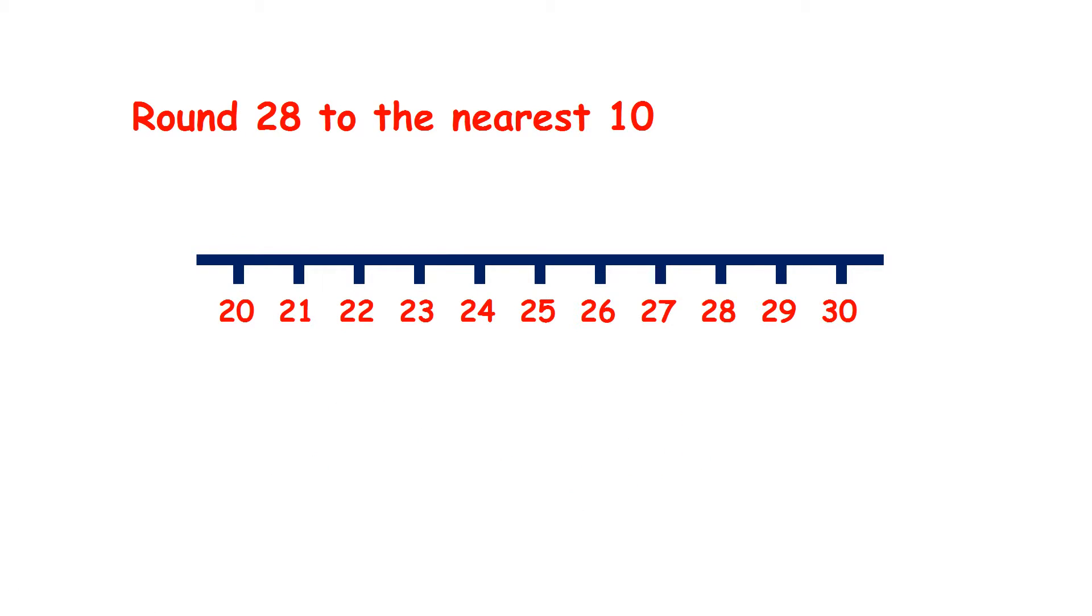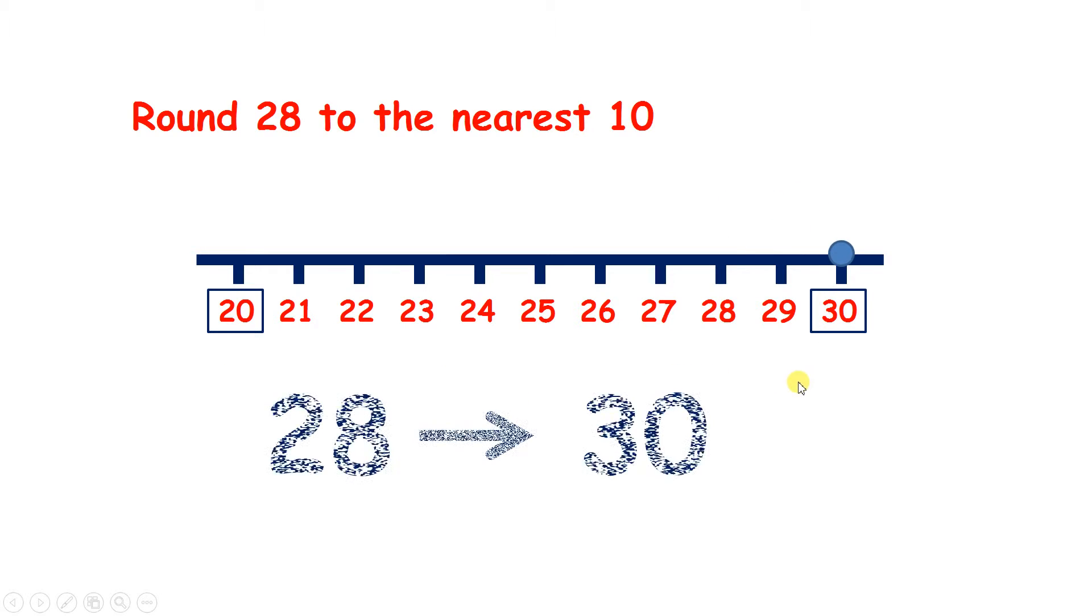So if we round 28 to the nearest 10, again, we're looking between 20 and 30, but 28 is closer to 30 than to 20, so we round up to 30.